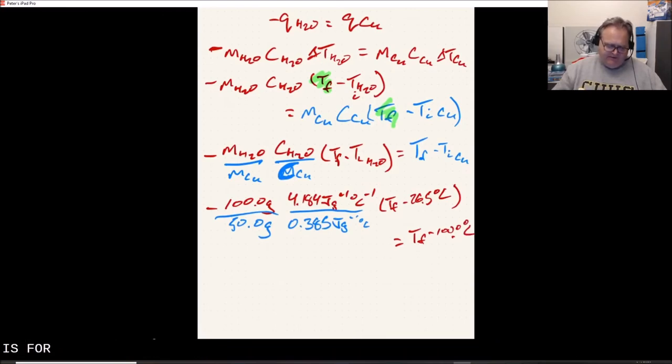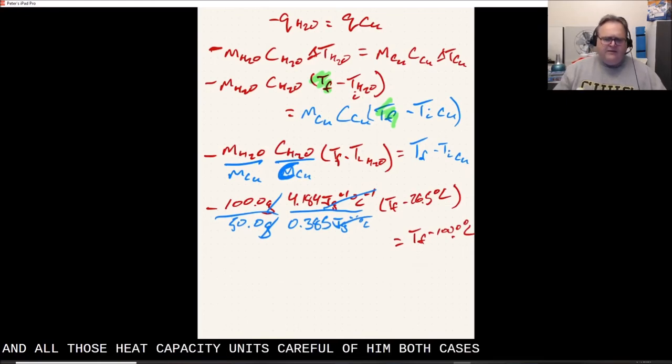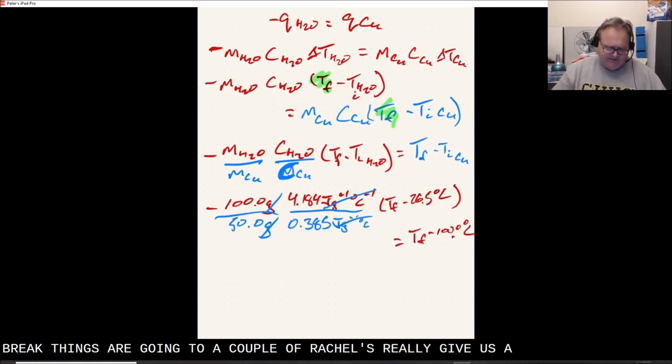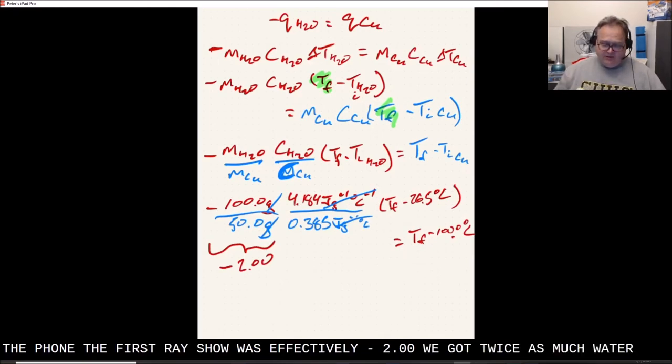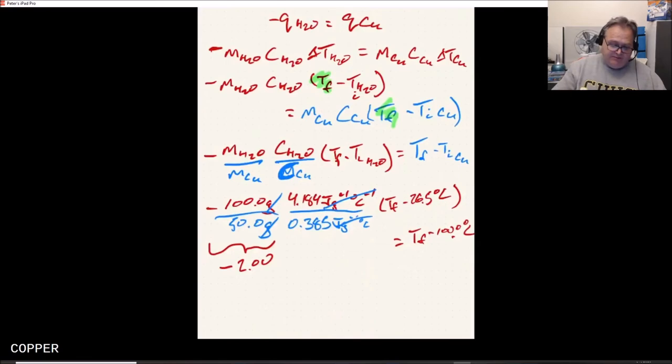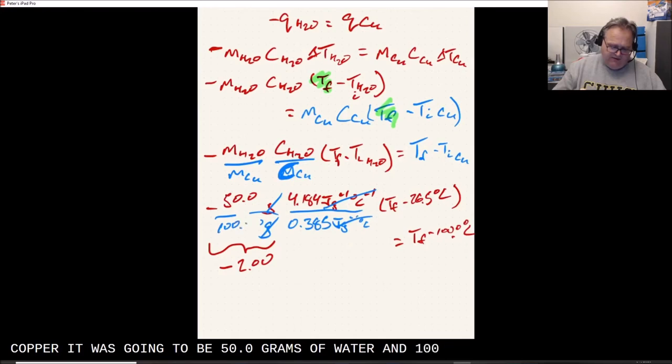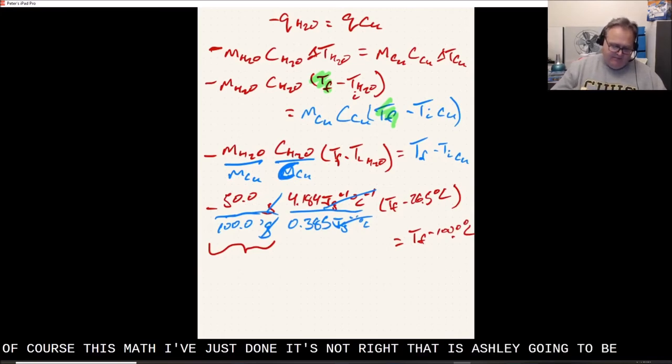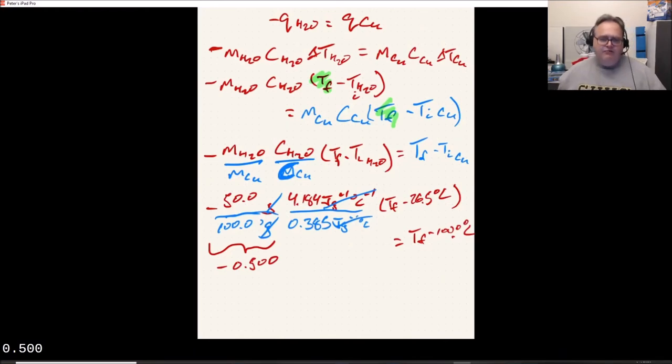And then of course we can still leave the Tf minus our 26.5 degrees Celsius. Now the reason I've done it this way is first things first, we're going to see the mass units cancel out in both cases. And all those heat capacity units cancel out in both cases. But what we've done is break things into a couple of ratios. It was going to be 50.0 grams of water and 100.0 grams of copper, which means this is minus 0.500 for the ratio.